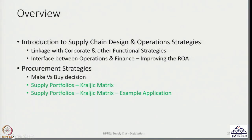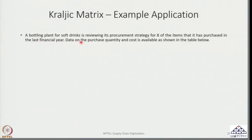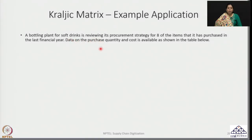I am picking up a very simple example: the case of a bottling plant for soft drinks, which is reviewing its procurement strategy for 8 items purchased in the last financial year. Data on purchase quantity and cost is available in a table. This is a plant-level decision making. As mentioned in the last session, an organization could look at procurement strategies at the facility level or at the organizational level.